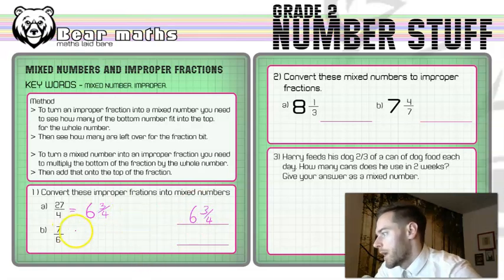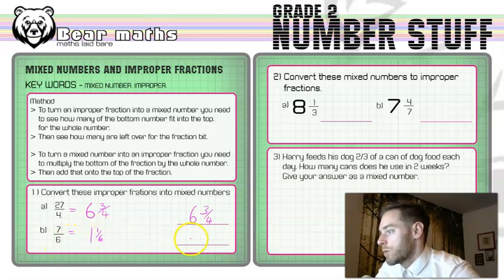Now the second one, much the same thing. We look at six, see how many times it fits into seven. It goes in one whole time with one left over out of the six that was already there on the bottom. So one and one sixth is the answer to that one.